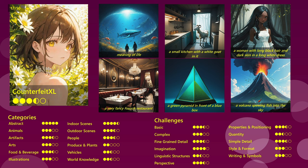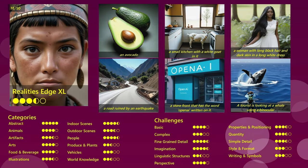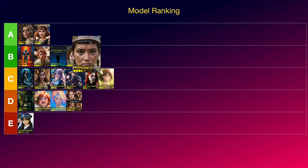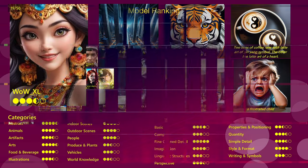Counterfeit XL gave me kind of a mixed impression. It performed especially well at abstract scenes and also at indoor scenes, but it also had some issues at other categories, but not bad after all, so it is going into C. Then there is the Realities Edge XL model, which was great at abstract scenes, indoor scenes and people, as well as fine grained detail and imagination. I was hesitating between A and B, but decided to put it into B. Next comes Wow XL, which was really wow — exceptionally good at abstract scenes and arts, as well as fine grained details and no real weaknesses in any other categories. It is definitely one of my favorite models, so I am putting it into A.